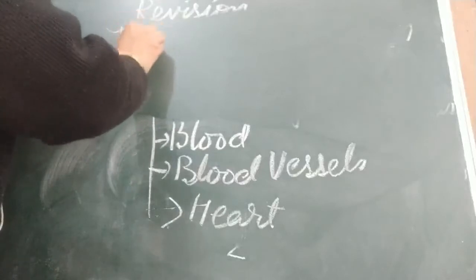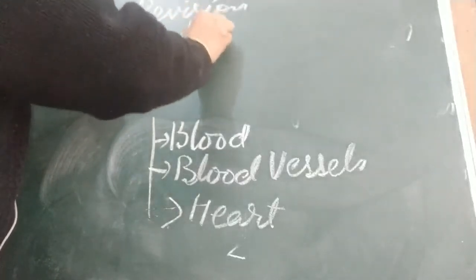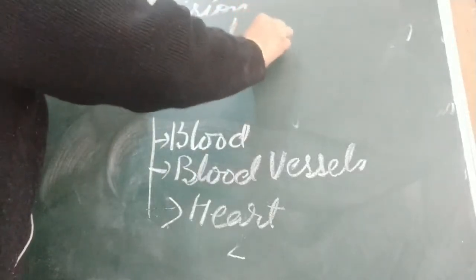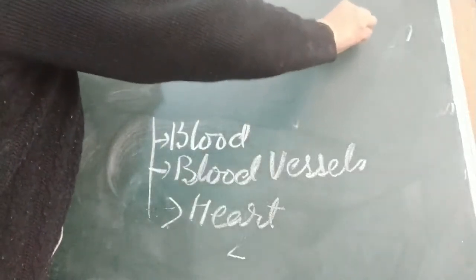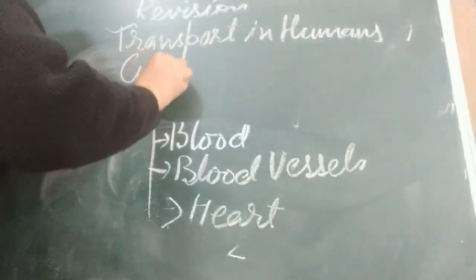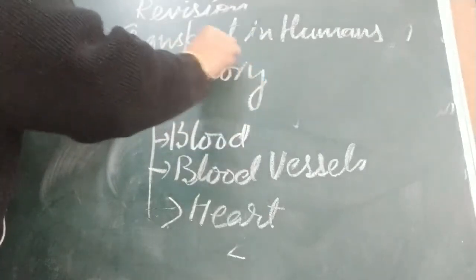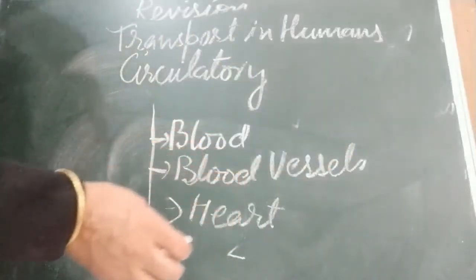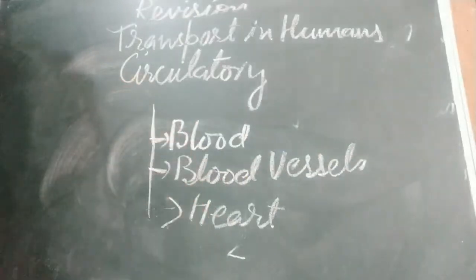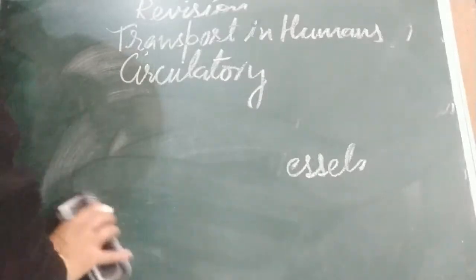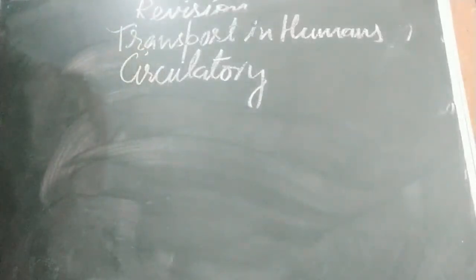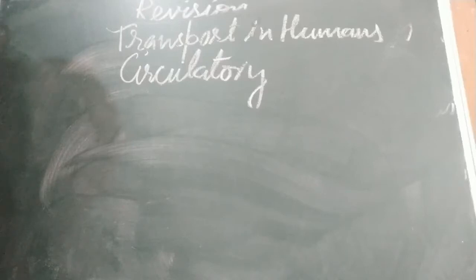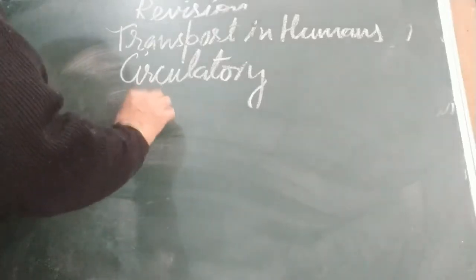How do things transport in humans? We have a proper circulatory system consisting of blood and blood vessels. Blood is a fluid — it is a type of tissue. It flows in blood vessels and forms a medium through which nutrients, important gases, water, and waste products are transported inside the body.